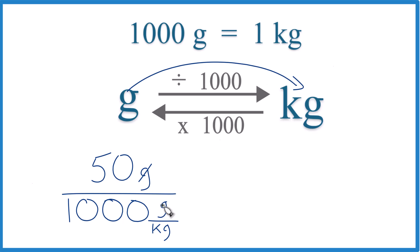Now grams on the top and the bottom, they cancel out. We're going to be left with kilograms. So we're dividing by a thousand. Let's move one, two, three decimal places.